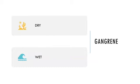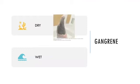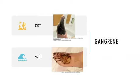Gangrene is necrotic tissue that appears black and can be classified as wet or dry. Dry gangrene is more common in PAD, develops more slowly, and has a dry, dehydrated appearance. Wet gangrene is gangrene that is infected. If gangrene looks moist, is foul-smelling and blistering, suspect wet gangrene, which is a surgical emergency and requires urgent debridement and IV antibiotics.